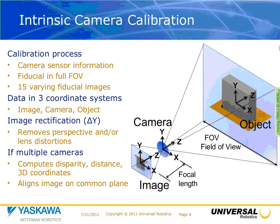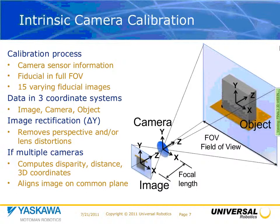Let's set a few basics around intrinsic camera calibration. I've set up an XYZ coordinate system we'll be referring to throughout the talk. Z is the depth; X and Y is your normal engineering orthogonal point of view — Y up, X left and right. In a normal intrinsic camera calibration, you'd be collecting camera sensor information, ensuring a full field of view, and typically running a fiducial target like a checkerboard, taking about 15 varying images at different skews and angles, then recording and adjusting that data.